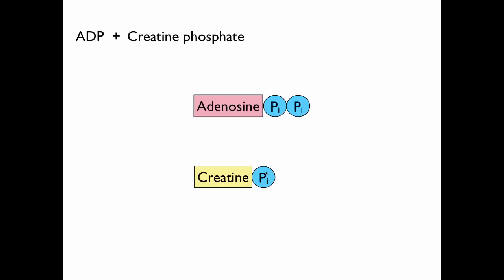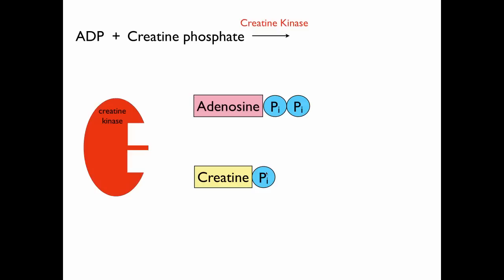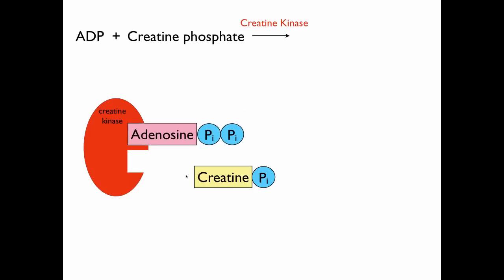Every chemical reaction in the body needs an enzyme, and so the enzyme for this reaction is called creatine kinase. Remember all enzymes end with -ase. What this is going to do is lower the activation energy and bring our two substrates in close proximity to one another. Remember enzymes work through a lock and key mechanism so that very particular substrates bind to them.